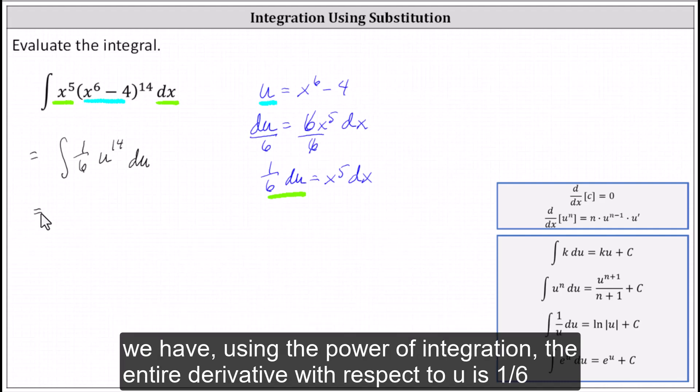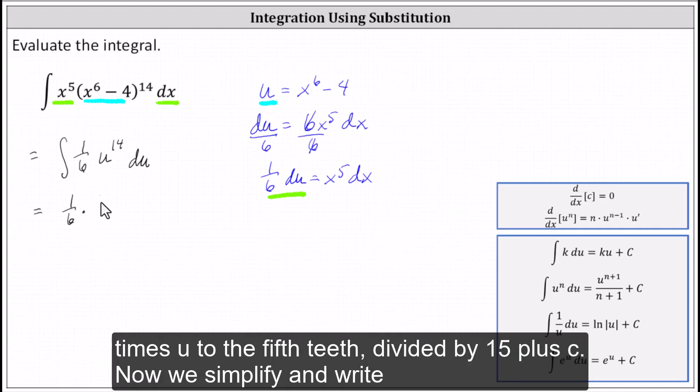Using the power rule of integration, the anti-derivative with respect to u is one-sixth times u to the 15th divided by 15 plus c.